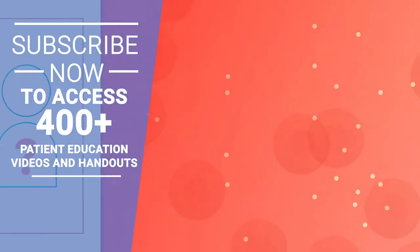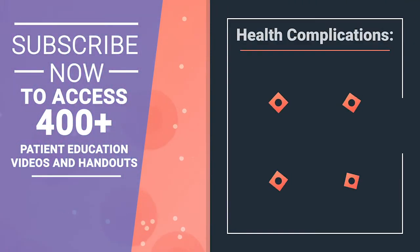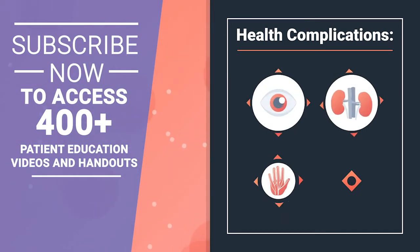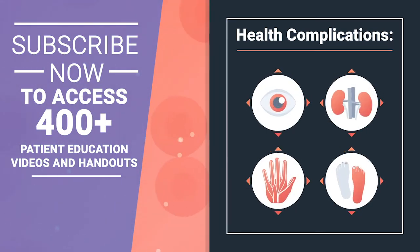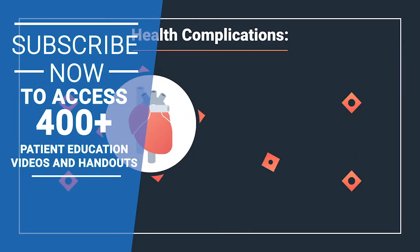Over time, too much glucose in the blood can damage your organs and tissues, which can harm your eyes, kidneys, nerves, or feet. It can also lead to heart disease or stroke.